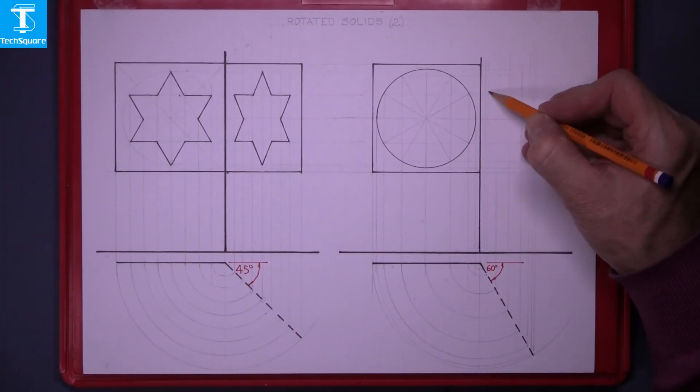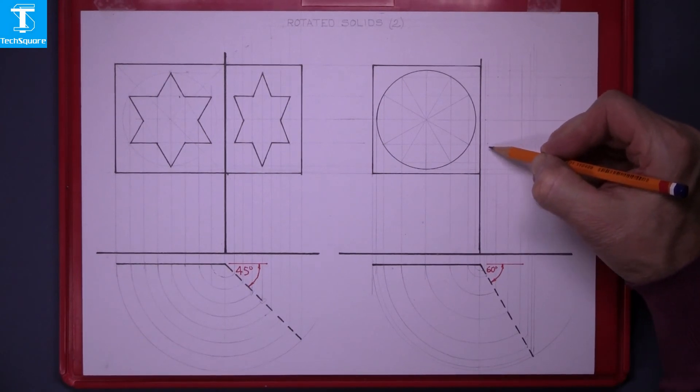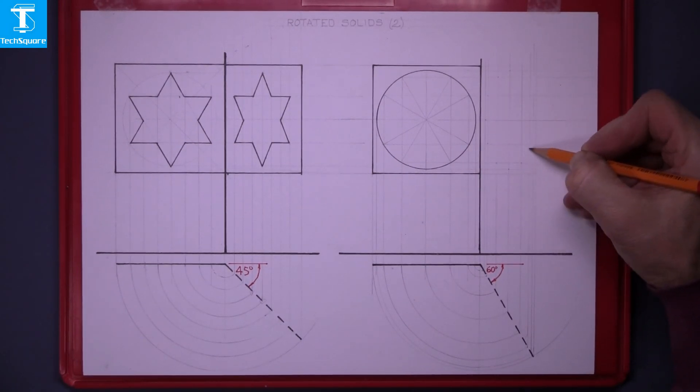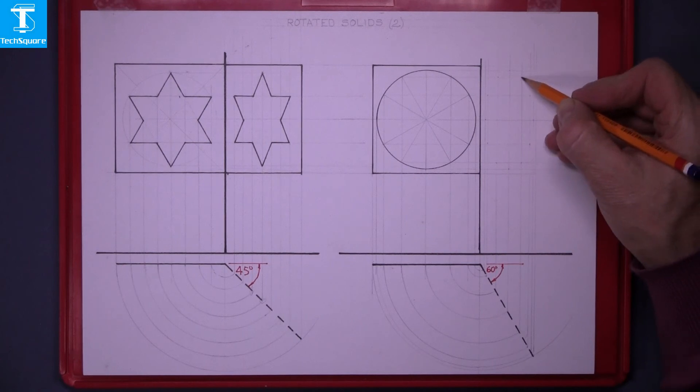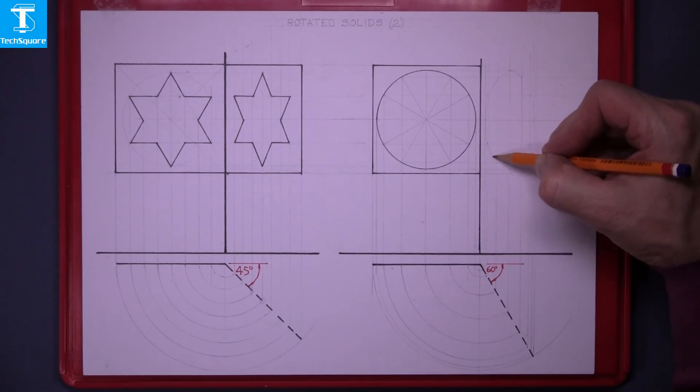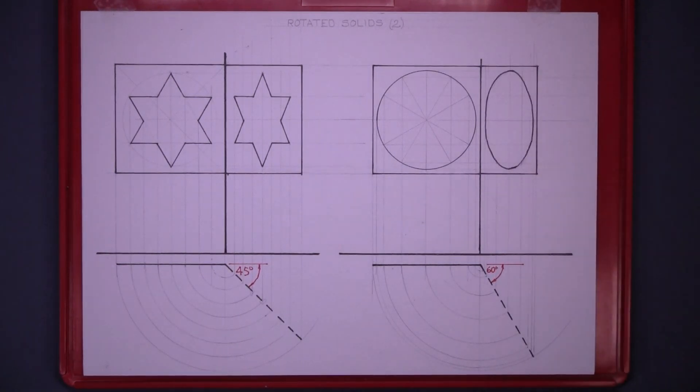Now just find the points on the circle, line in your curve, and that's your sign in its new location.